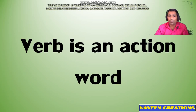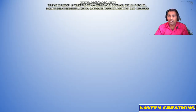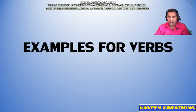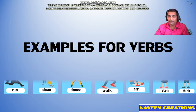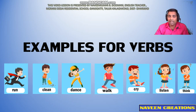Now let us move forward. It is very necessary for us to know the meaning and examples for verbs. A verb is an action word. A word which speaks about the action of a subject in a sentence is called a verb. Examples of verbs are: run, clean, dance, walk, cry, listen, think.